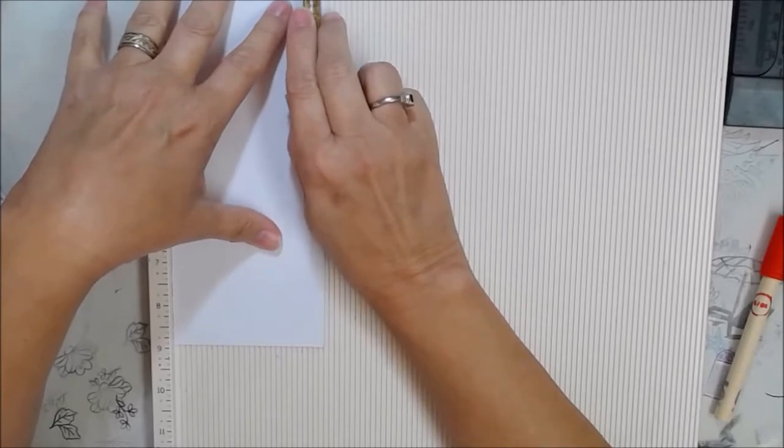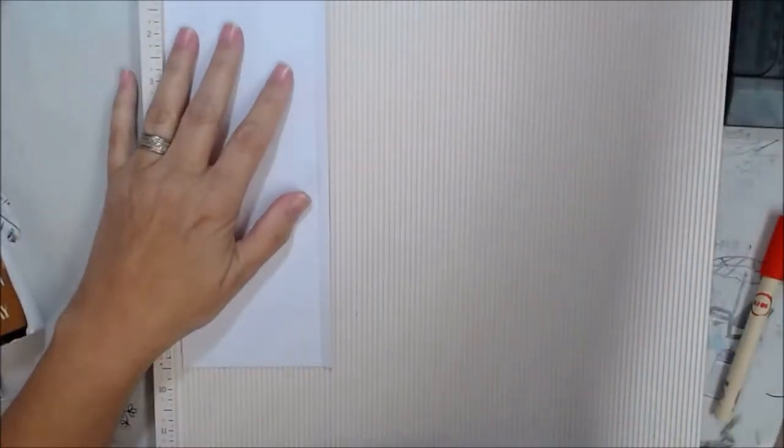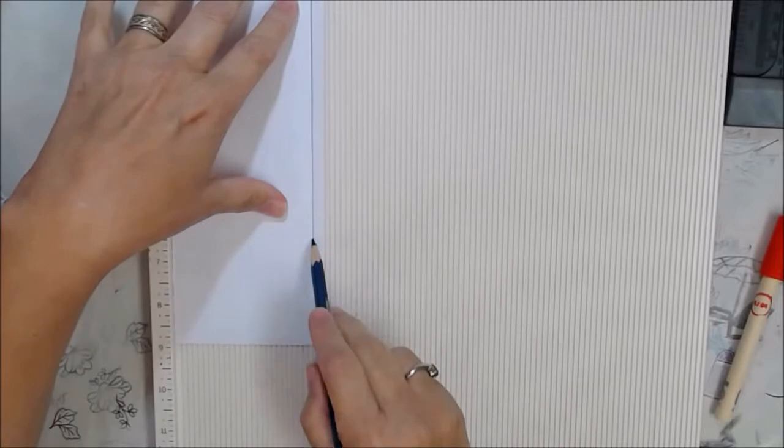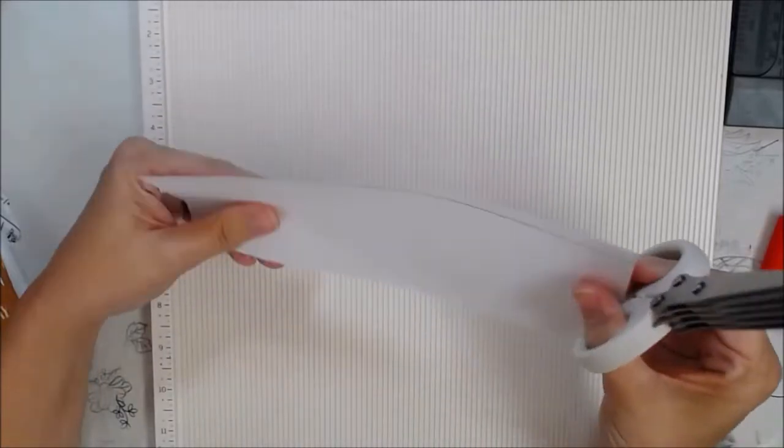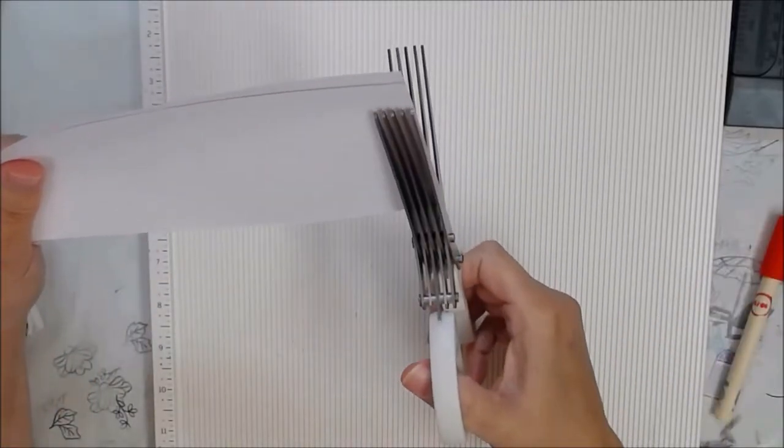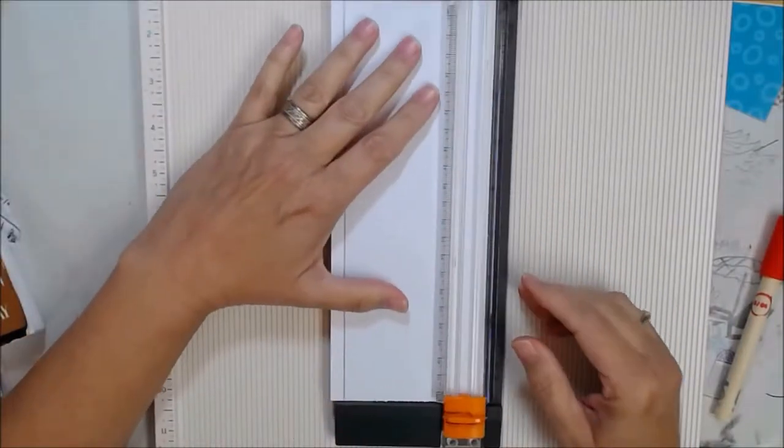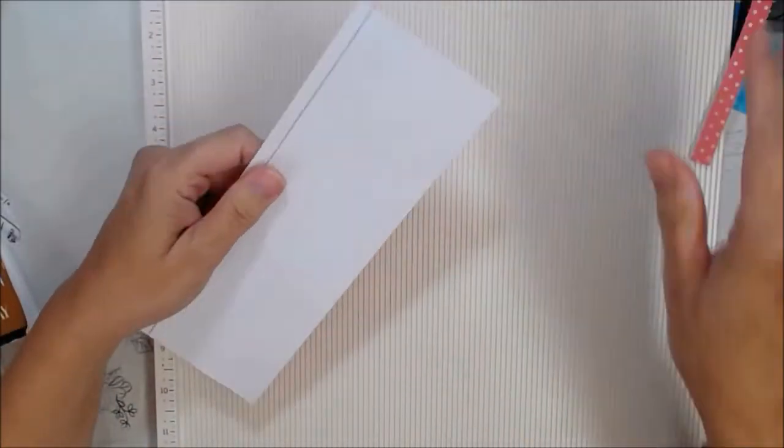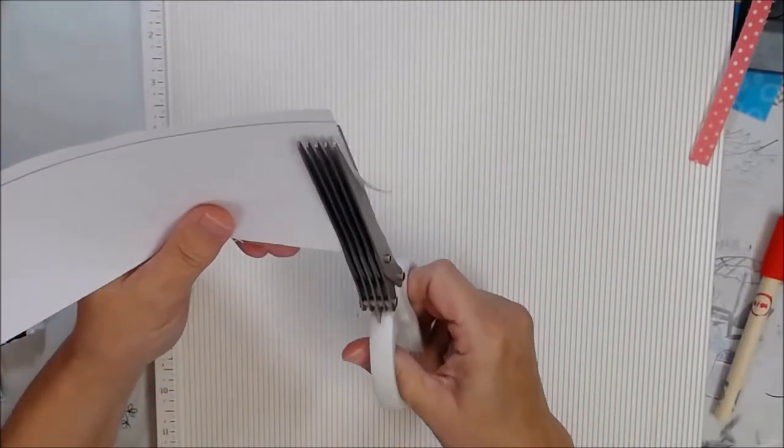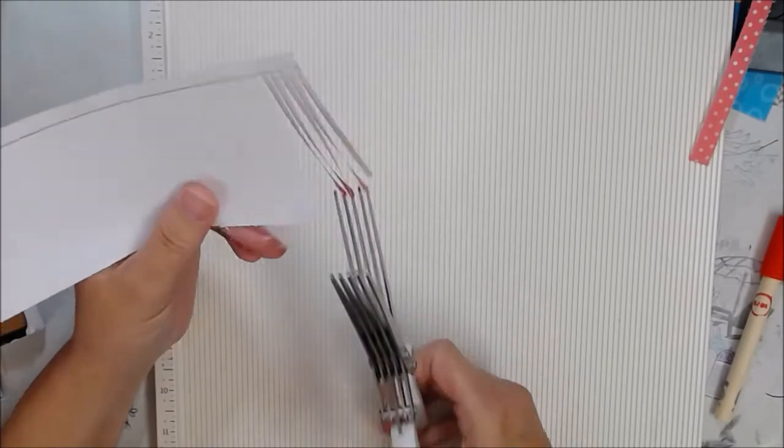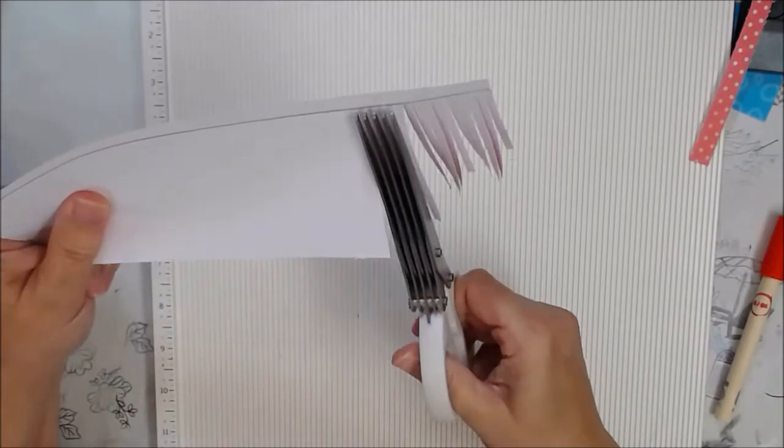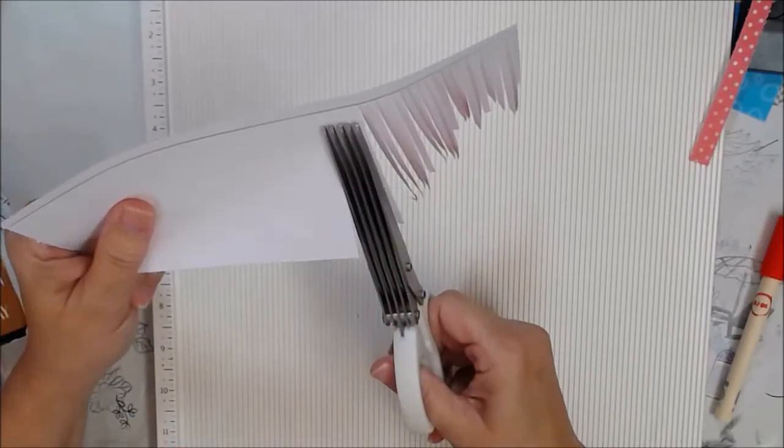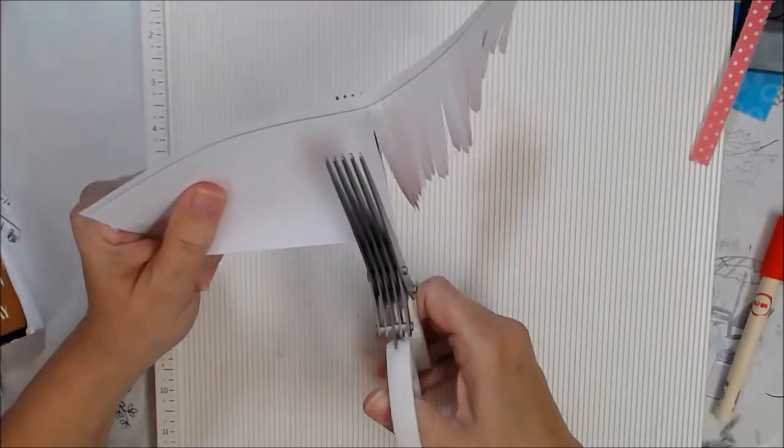So I'm just basically taking a strip of scrapbook paper and I was going to use the scoreboard to score a line and then I thought well y'all can't see the scored line so I'm just going to draw a pencil across there. And I'm using the Martha Stewart fringe scissors and they don't scooch forward too well so I just kind of don't scooch forward very often.